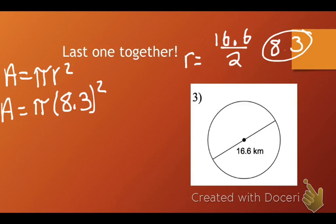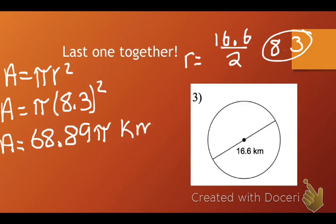So, we need to square 8.3. So, you can either do 8.3 times 8.3, or you can find the squared button on your calculator. And, we get A equals 68.89 pi. And, then the units, km squared.